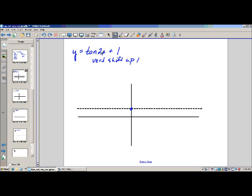Now, what does this 2 do? This 2 affects the period, and the period is the x. Now, here's where we see a change. The normal period for tangent is pi, so the period is going to be pi divided by 2.